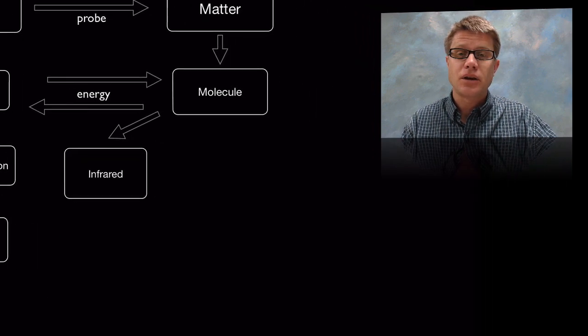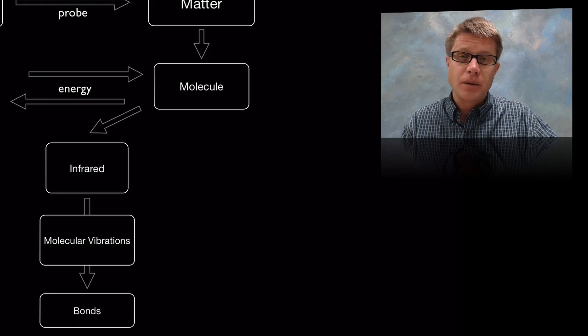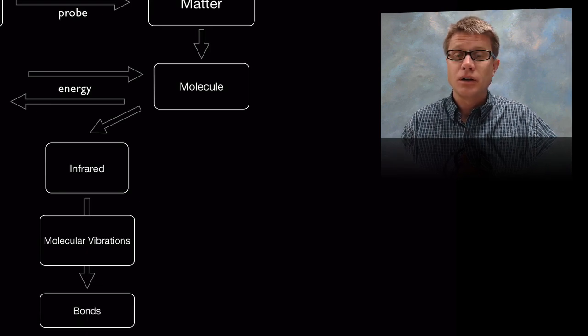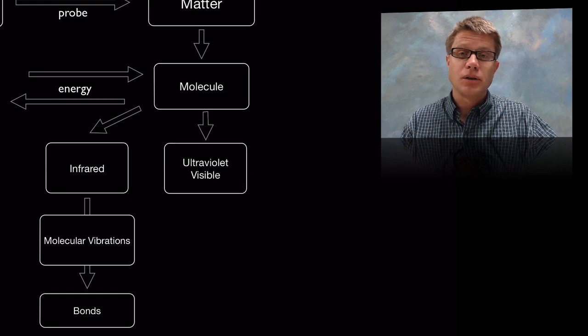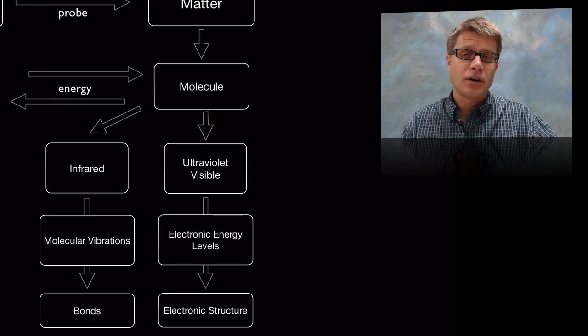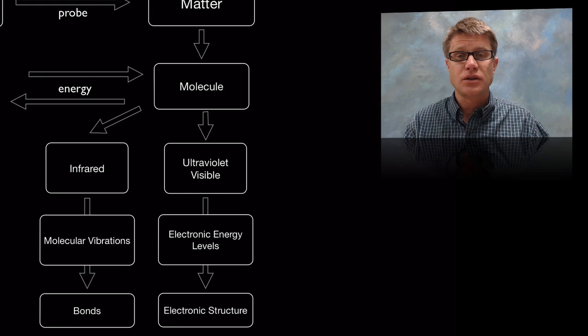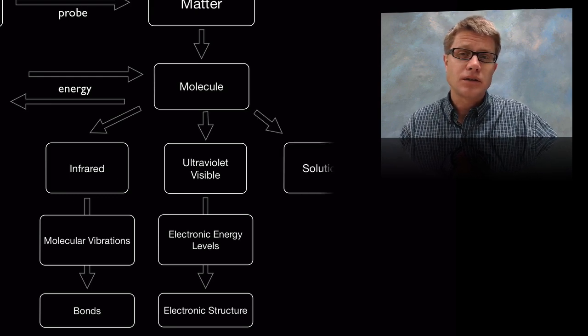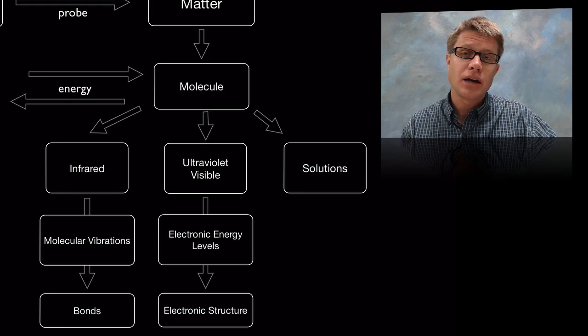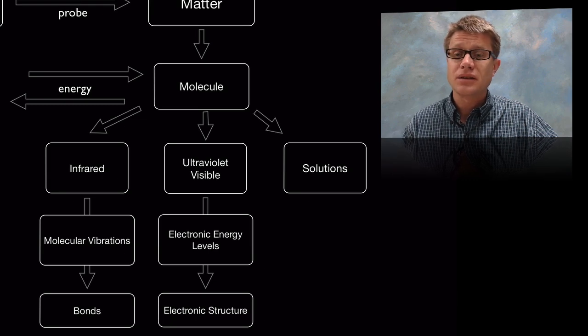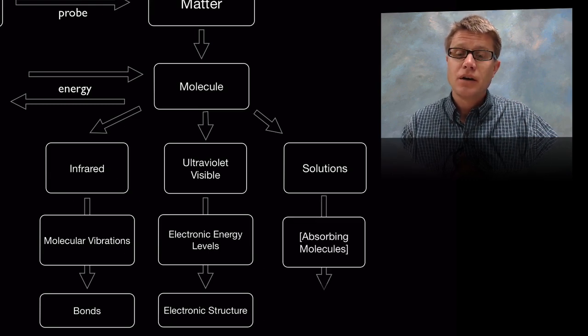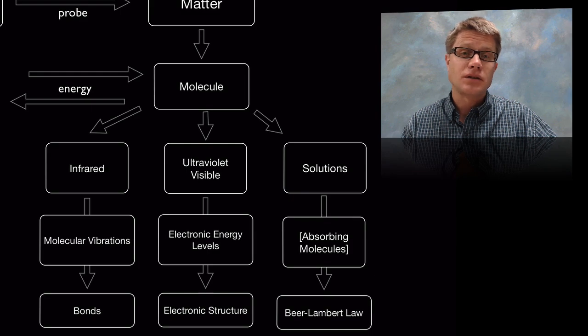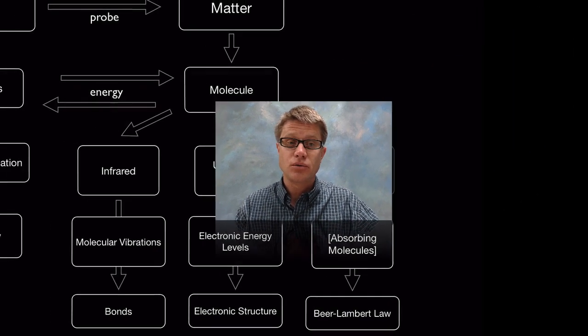We can use different types of photons to figure out different things about molecules. Infrared light is incredibly important at looking at the vibrations within atoms and molecules and figuring out what bonds they have. If we're using ultraviolet or visible light we can look at the electronic structure - where the electrons are found and what they're doing. Finally, we can look at solutions using light, and according to Beer-Lambert law we can figure out the concentration of those absorbing molecules.